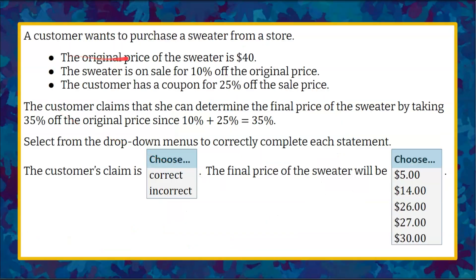We have a customer who wants to purchase a sweater from a store. We're told three things about this purchase: the original price of the sweater is $40, the sweater is on sale for 10% off the original price, and third, the customer has a coupon for 25% off the sale price.